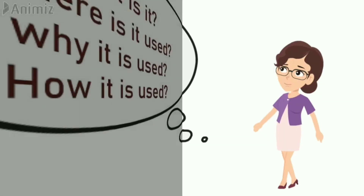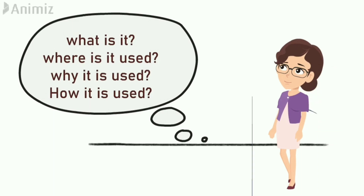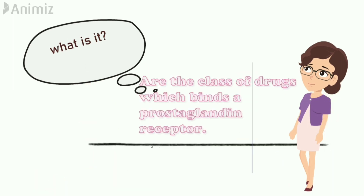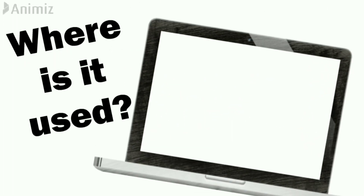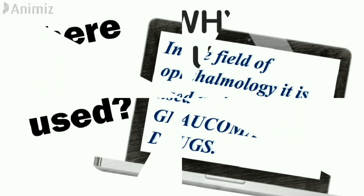Prostaglandin analogs are also known as prostamide analogs. What is it? These are a class of drugs which bind with the prostaglandin receptors. Where is it used? It is used in the field of ophthalmology as anti-glaucomatous drugs, in the treatment of glaucoma.